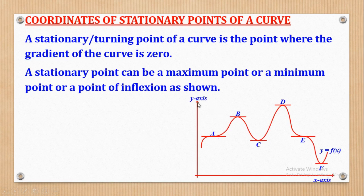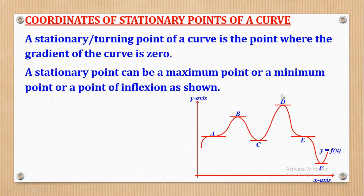Looking at the diagram, we shall identify the Maximum, Minimum and Points of Inflection. Maximum Points are those whereby there is a change in gradients. For example, here the gradient is positive then negative, so this becomes a Maximum Point. Similarly, gradient here is positive then negative, so this is also a Maximum Point.